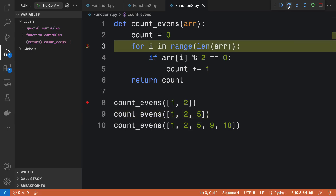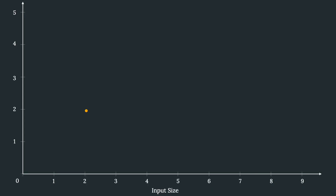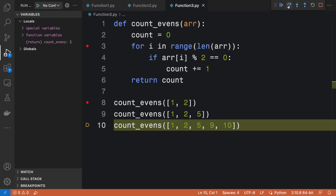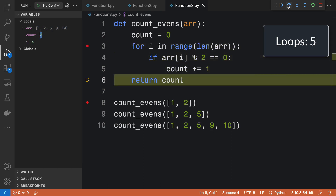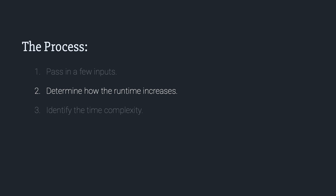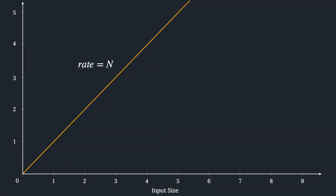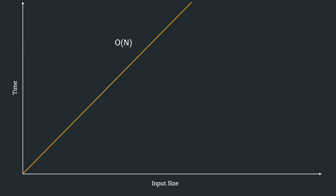Passing an array with three elements, the loop is going to run three times before it returns a final count. Passing in an array with five elements, we can expect the loop to run five times. We can see a pattern — the size of the input dictates how many times the loop is going to run. The rate of increase equals n: as you increase the input size, the running time will increase in kind. The time complexity is O(n). The running time increases linearly with the input.